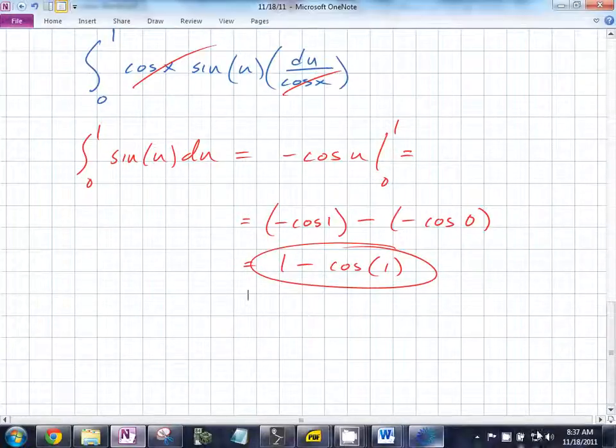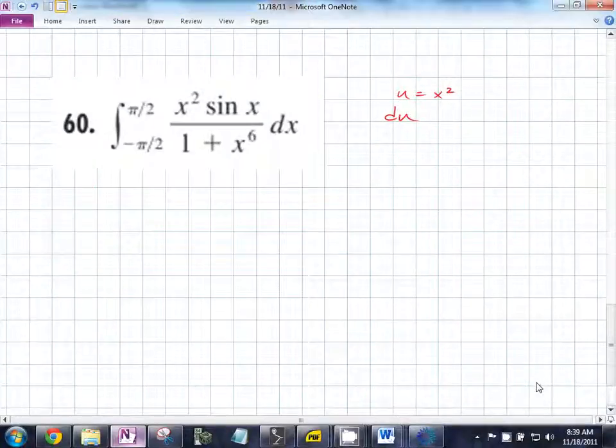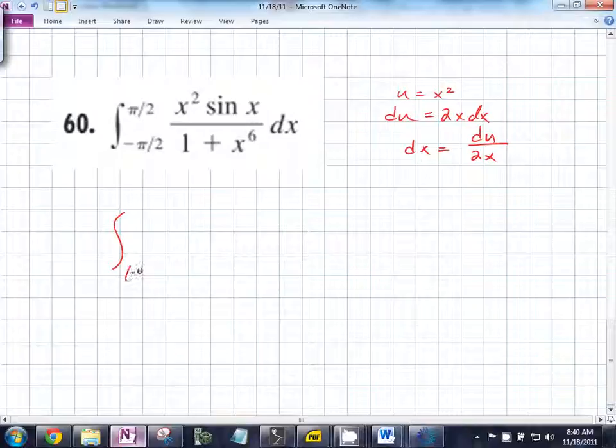Du is equal to 2x dx. So dx is equal to du over 2x. So let's substitute. What are our limits of integration? Negative pi over 2 and pi over 2 squared. Why is that a problem? What's about pi over 2 squared? They're equal. What happens when you integrate from A to A? You get zero. We broke it. We broke it. Do you understand why it's broken? It's broken. It's a problem. I don't like this.